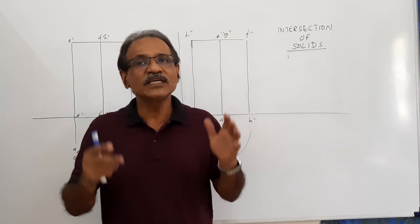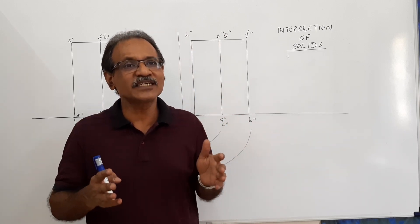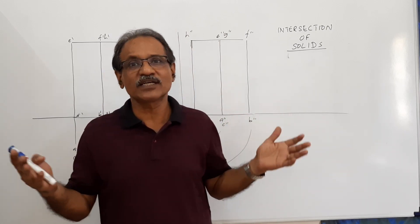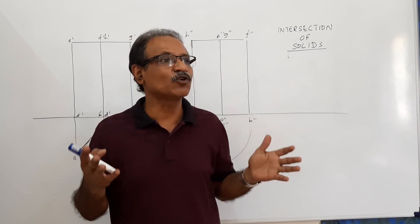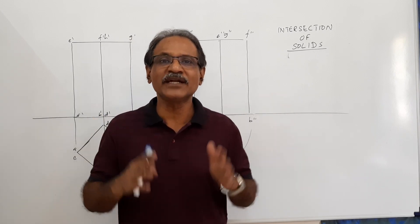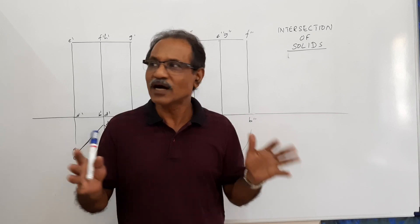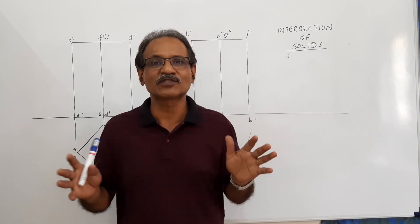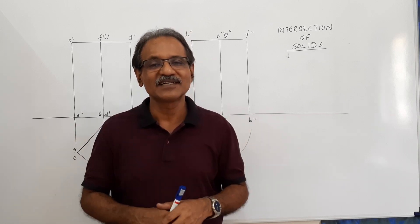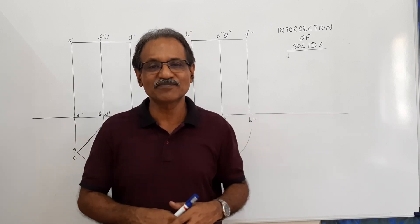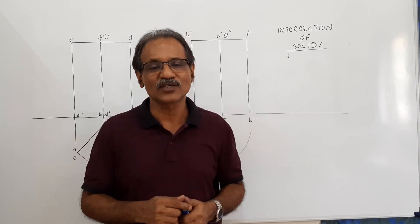We have intersection curves all around us wherever one object is joined to another object. We just don't particularly notice them, that's all.